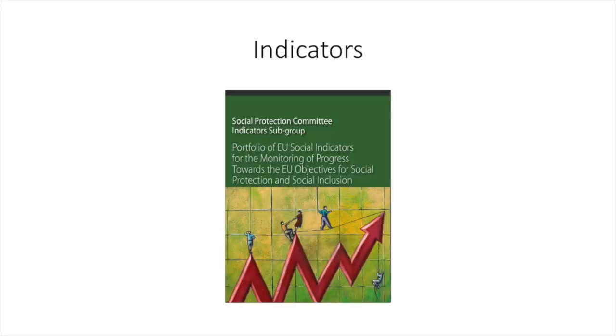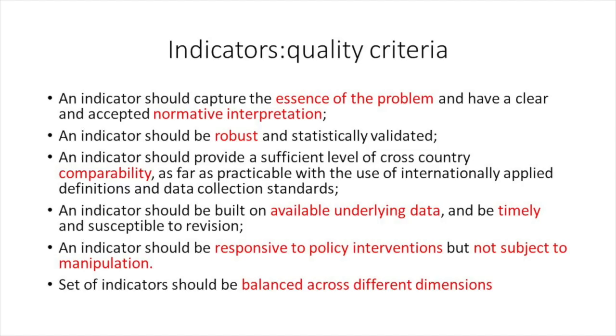I have talked about the indicators of poverty or social exclusion in the target. However, a much broader set of indicators has been agreed by the member states to monitor the social situation. These are listed in the EU social indicators portfolio, which can also be found on the website of the Indicators Subgroup of the Social Protection Committee. It is relevant to understand that these indicators are not just a collection of statistics, but have been agreed upon by the member states and the European Commission.